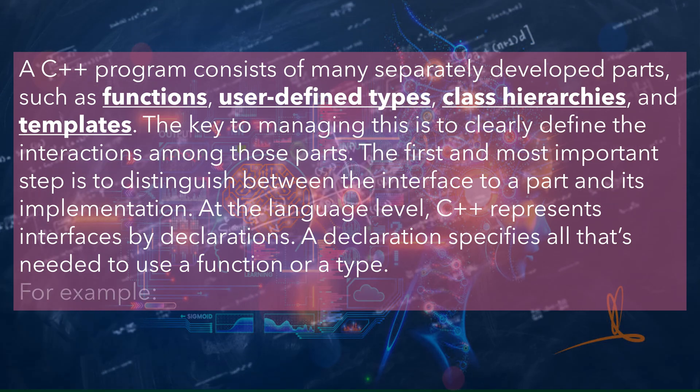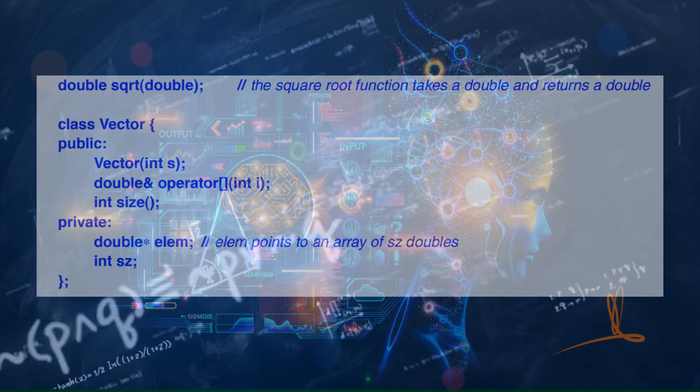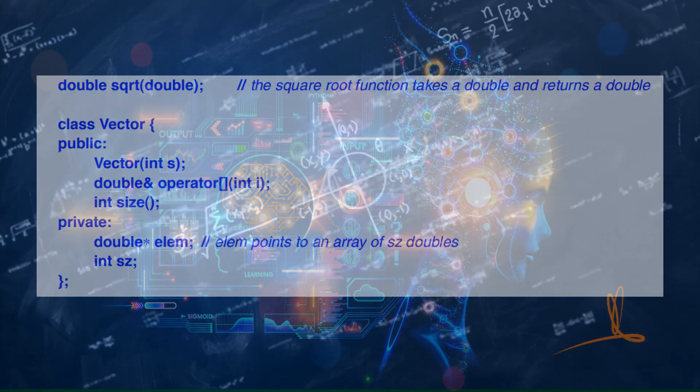For example, double sqrt(double) - the square root function takes a double and returns a double.